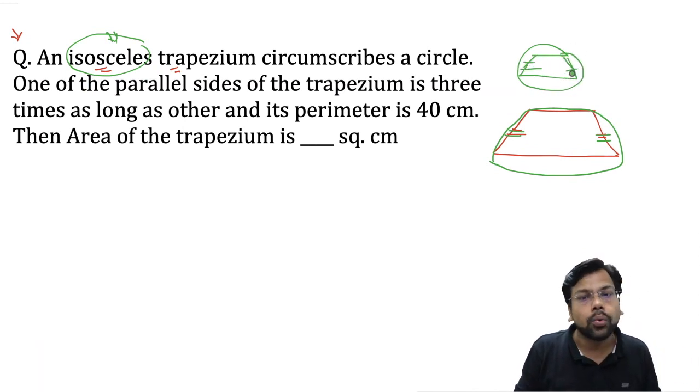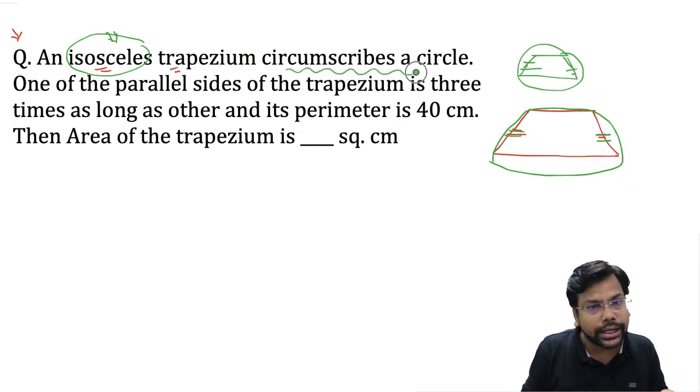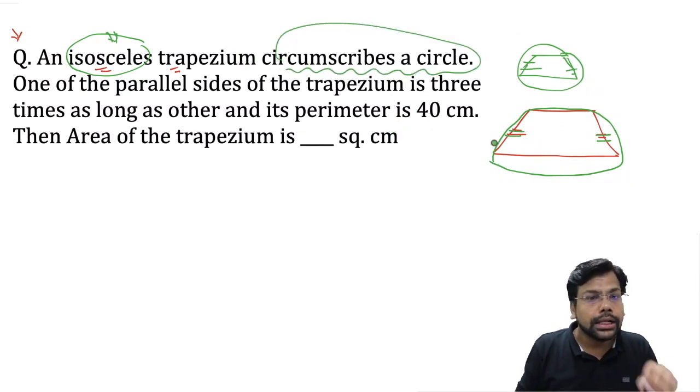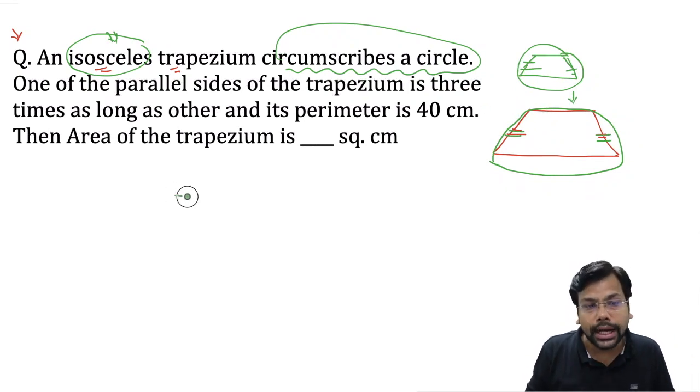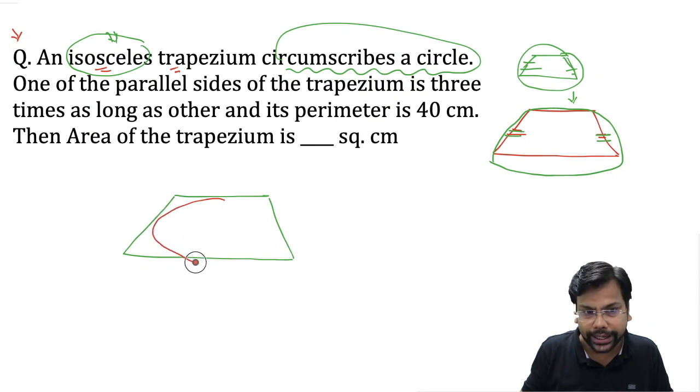One of the parallel sides of trapezium is three times longer than the other, and the trapezium circumscribes a circle. Now you have a trapezium which is made inside a circle, which is not as per the scale.